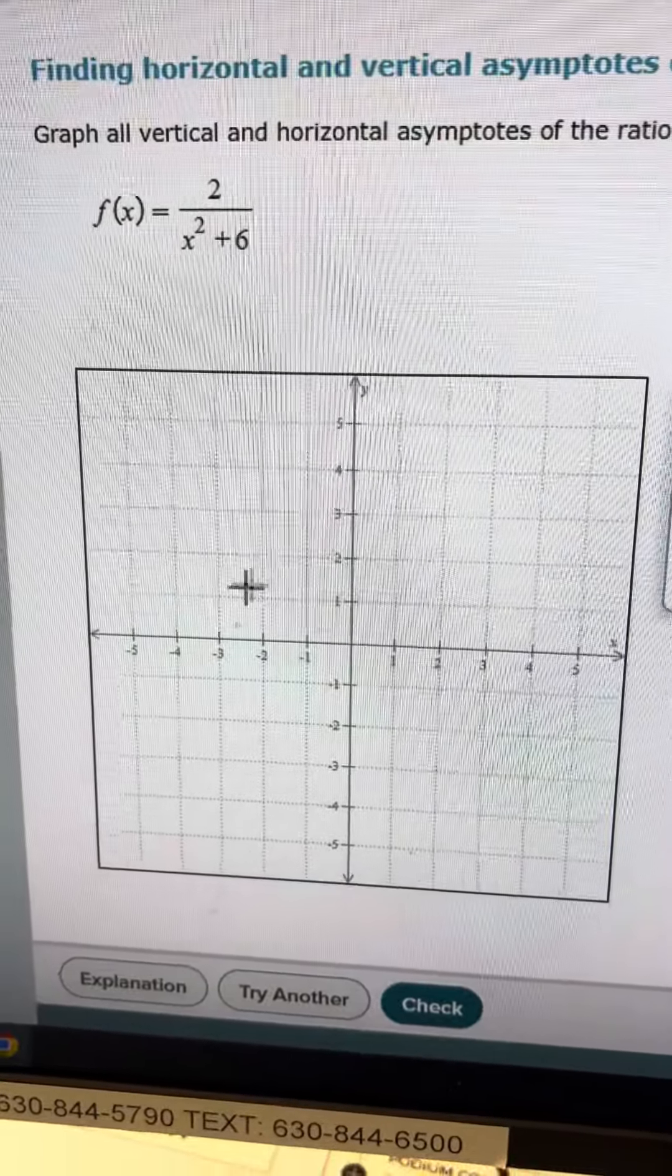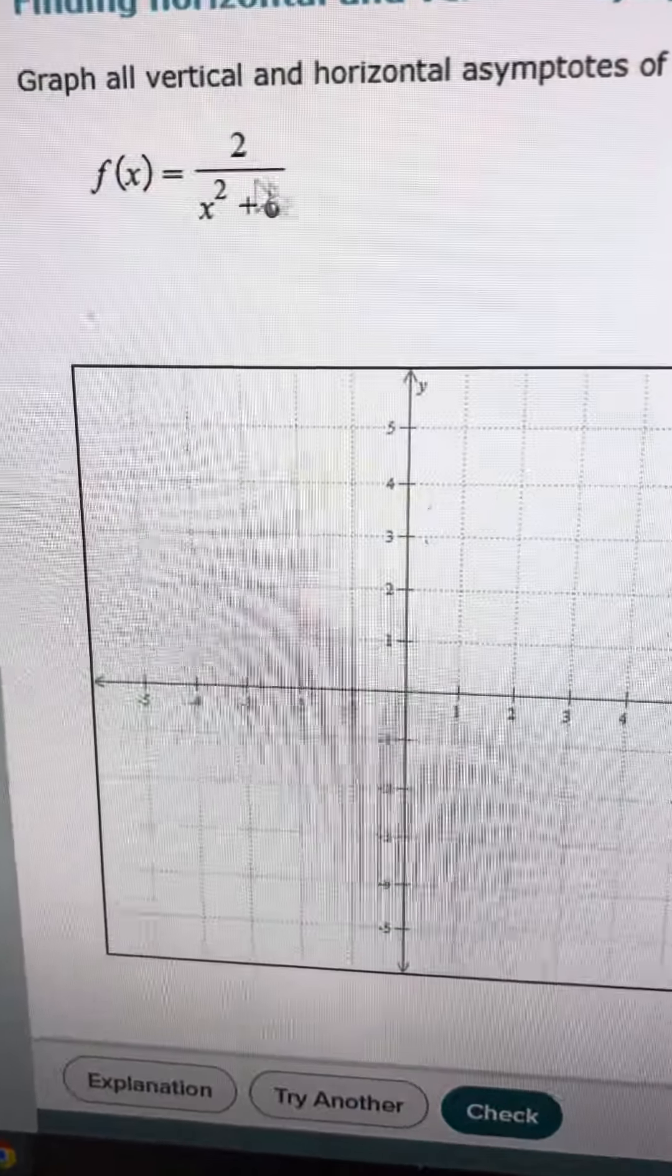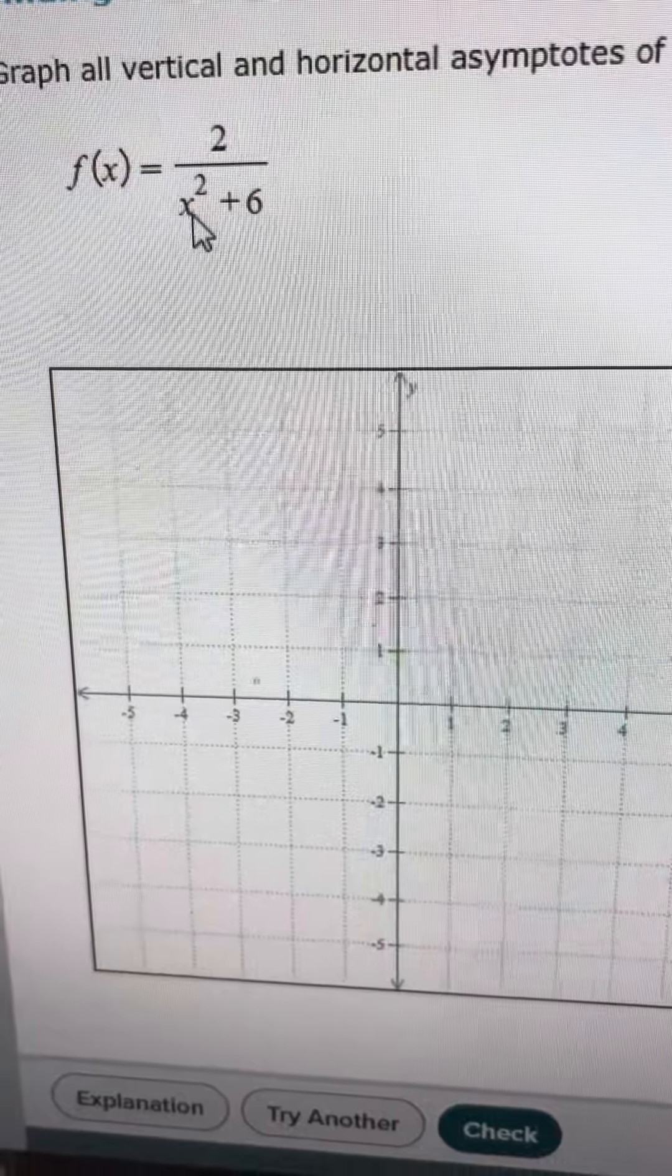The directions here state to find all vertical and horizontal asymptotes. We have f of x equals 2 over x squared plus 6.